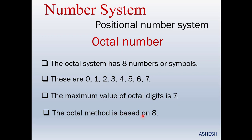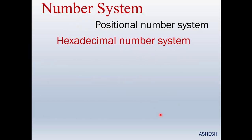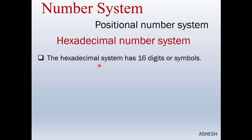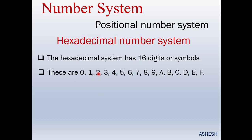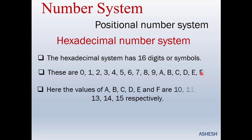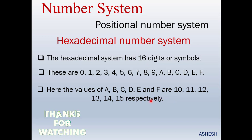The hexadecimal number system has 16 digits or symbols: 0, 1, 2, 3, 4, 5, 6, 7, 8, 9, A, B, C, D, E, F. The value of A is 10, B is 11, C is 12, D is 13, E is 14, and F is 15. Remember, 16 is not an element of the hexadecimal number system.